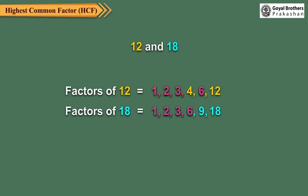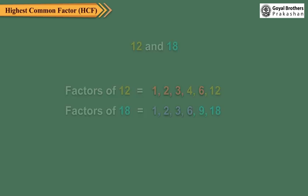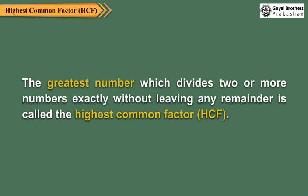Out of these common factors, 6 is the greatest factor which is common to both 12 and 18. The greatest number which divides 2 or more numbers exactly without leaving any remainder is called the Highest Common Factor, also written as HCF.